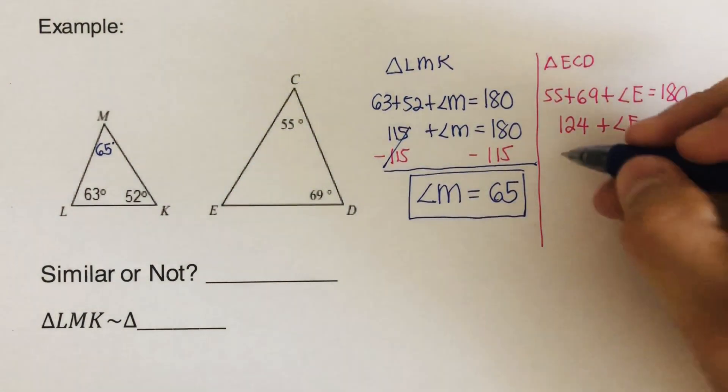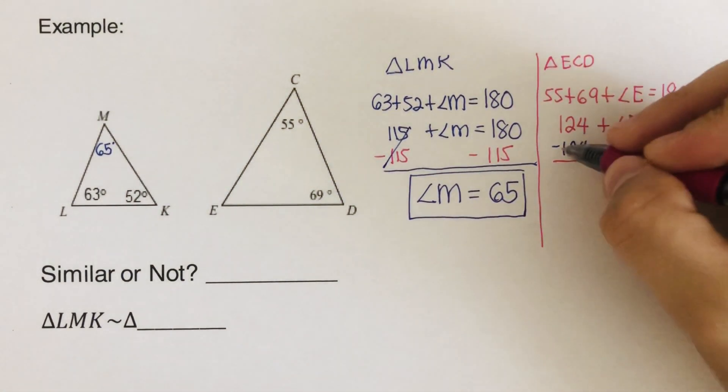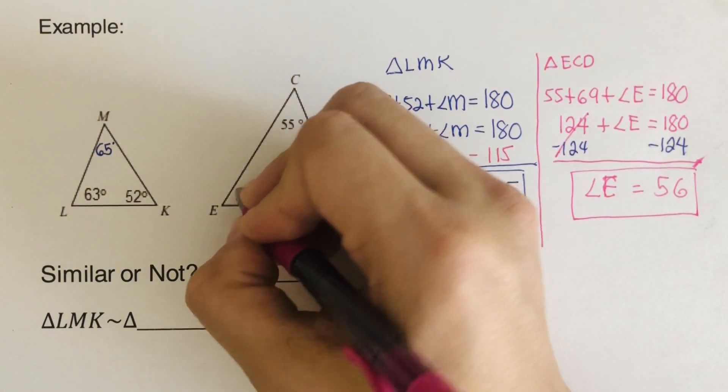So we subtract 124 from both sides. So minus 124 minus 124. So we can cross this out. Our angle E, so that's angle E right here, is equal to 56. So this is 56 right here.